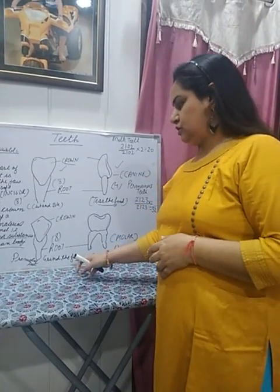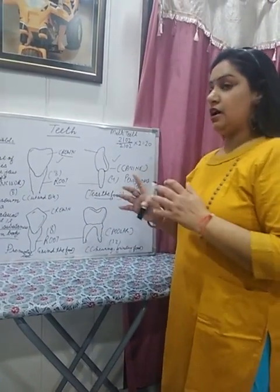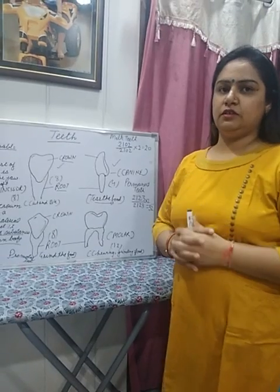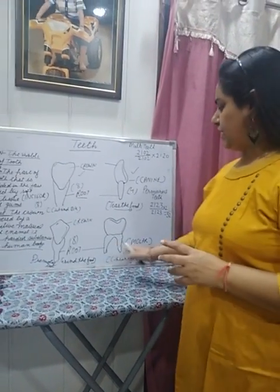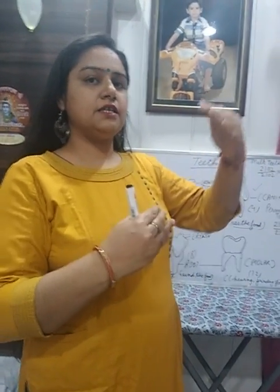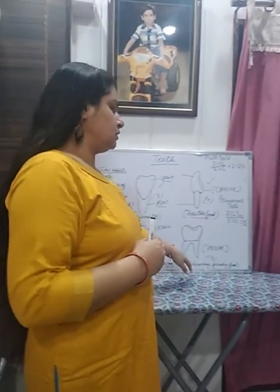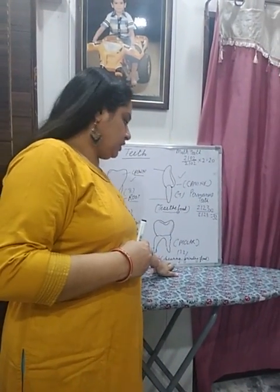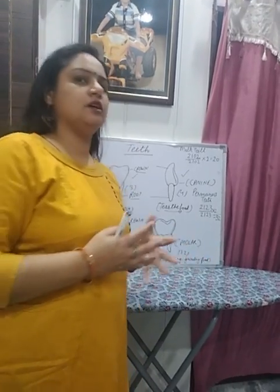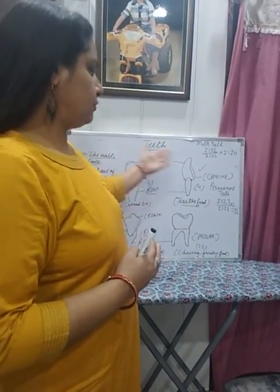Molars are the broad teeth and they are 12 in number — 6 in each jaw, 6 in the upper jaw and 6 in the lower jaw. The function of the molar teeth is chewing and grinding the food.